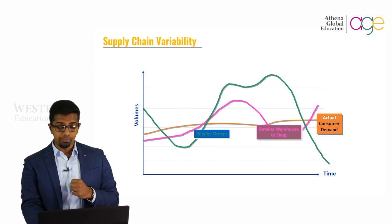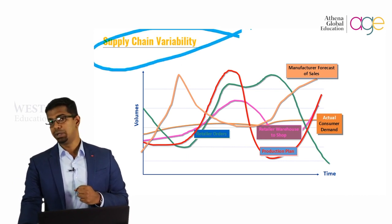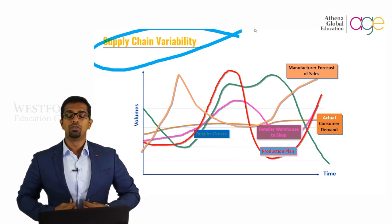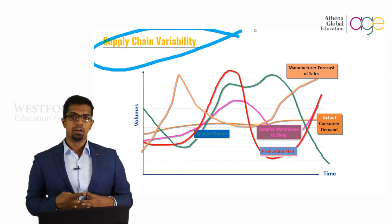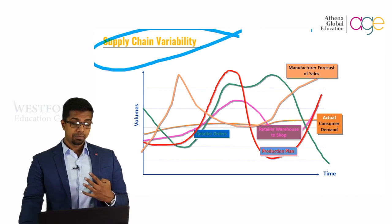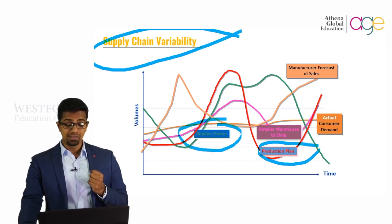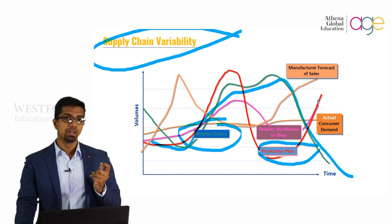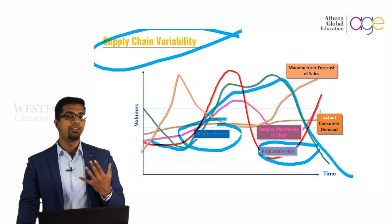If you look at this graph, it is a graphical representation of the variability of your entire supply chain, starting from raw materials to the end product. You are looking at demand and supply. There is always variation in both, and hence there is variation in your supply chain itself. You are looking at the production plan and retail orders, and you can see there is a huge variation in retail orders. You can also see a huge variation in actual consumer demand — not just consumer demand, but variation in everything.